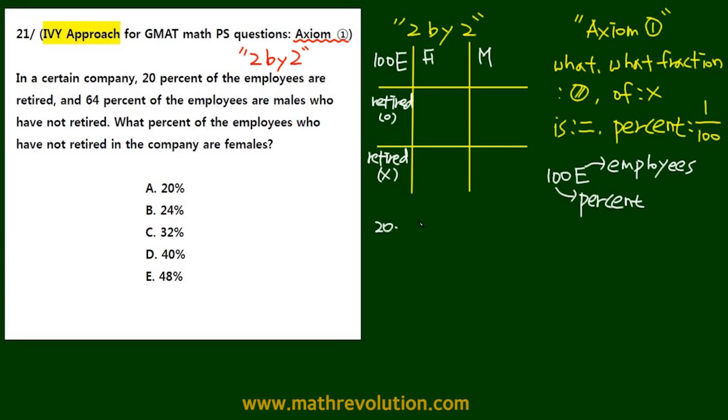So 20%, so 20 times 1 over 100 of the total, which was 100E, will equal 20E. So this is the people who are retired, so we know that this bit, this row, will be 20E. And therefore, this row will be 80E.